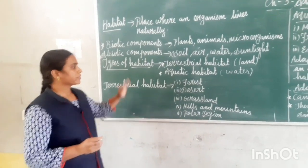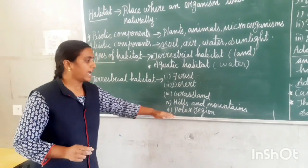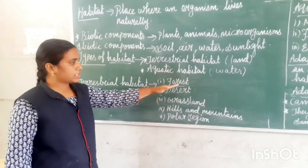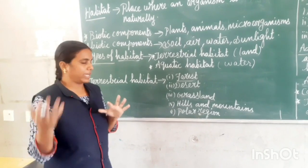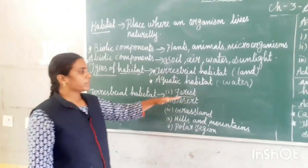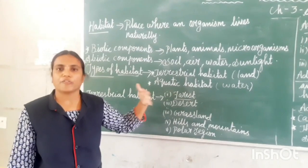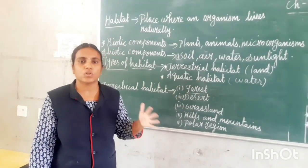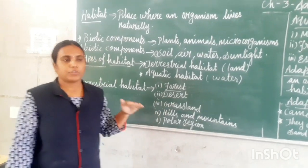The first type of terrestrial habitat is forest. Forest is composed of trees and plants with many different types of plants and trees. Animals that live in the forest include king cobras, tigers, and some birds. Plants living in the forest include orchids, vines, mosses, and ferns.